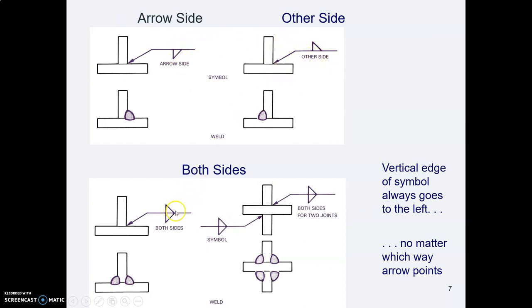You can also tell them to weld both sides by putting a symbol above and below the line. The arrow could come in from the right or from the left, from above or from below. But no matter what, that vertical edge of the symbol always goes on the left.